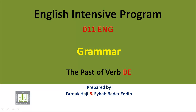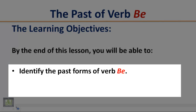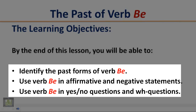English Intensive Program 011 Grammar: The Past of Verb B. Learning Objectives: By the end of this lesson, you will be able to identify the past forms of verb B, use verb B in affirmative and negative statements, and use verb B in yes-no questions and WH questions.